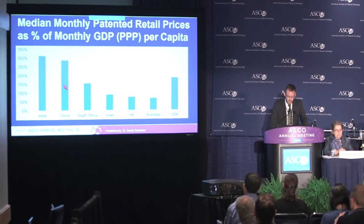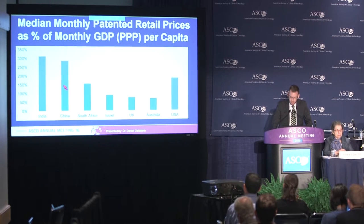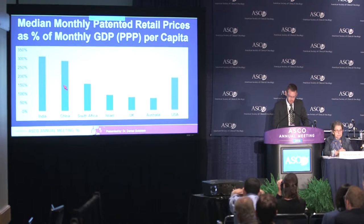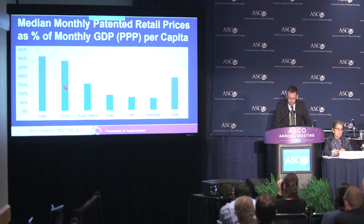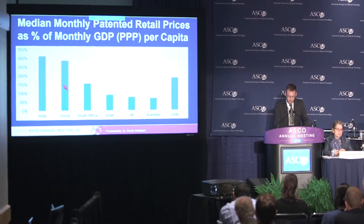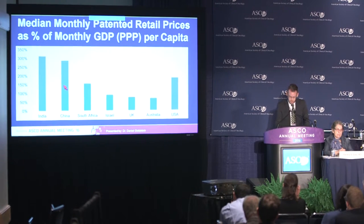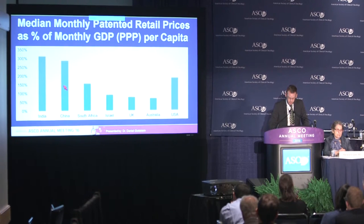This slide attempts to compare the ability to pay for cancer drugs. The median monthly price for each country is divided by the monthly GDP per capita at purchasing power parity. We see that despite lower prices in India and China, these drugs appear to be relatively less affordable than in other countries. In the USA, despite having the highest GDP per capita, given the higher drug prices, the drugs appear to be less affordable than in other developed countries. We see a similar trend for the 15 generic drugs, and that will be presented in the scientific session.